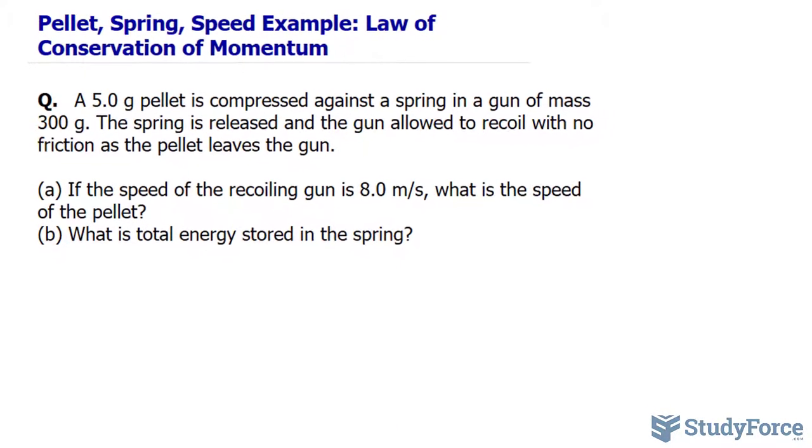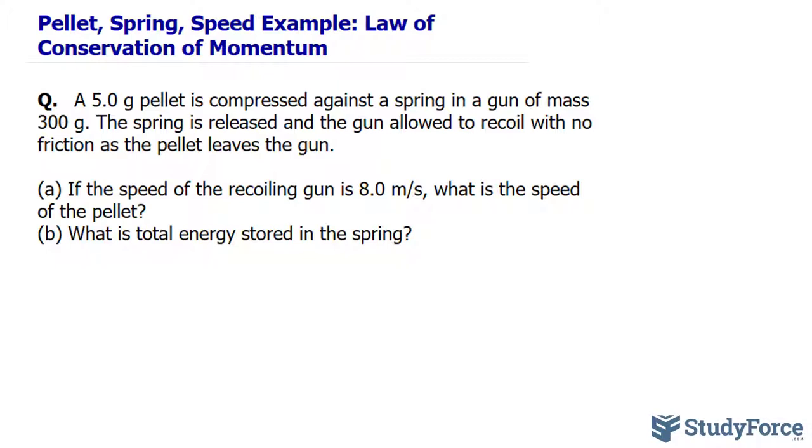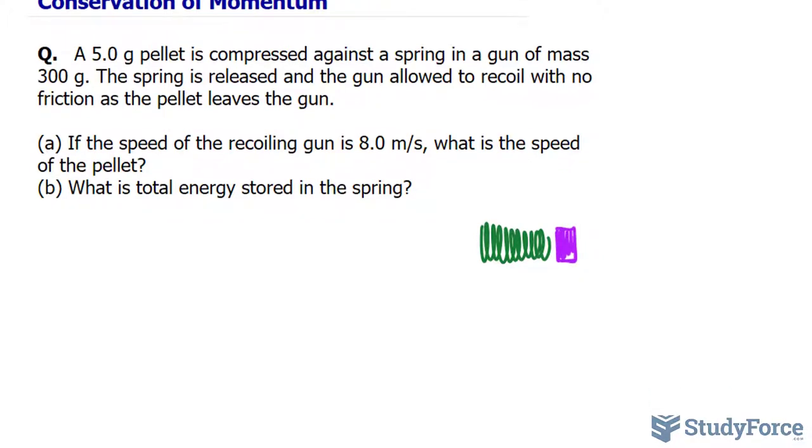Let's begin with an illustration of what's happening. Within a gun, there is a spring, represented here. And it is fully compressed and at the very end is the pellet. Once the spring is released, obviously the pellet will shoot in this direction and the spring will go back to its original position. The pellet has been shot in this direction.